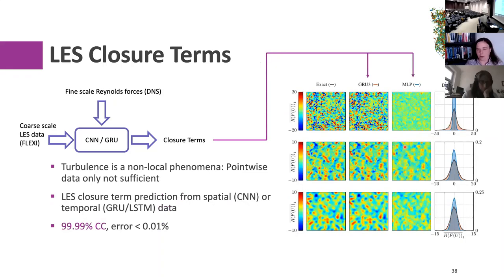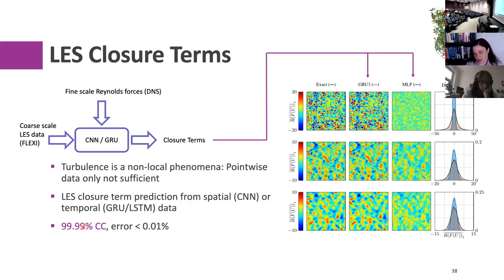We played around with that for a long time using both spatial and temporal data. We were able to get, for this simple case, very accurate predictions. With a particularly successful sequence network, we were able to achieve 99.9% correlation between our prediction and the true Reynolds stress. For comparison, the Smagorinsky model has about 0% correlation, and the scale similarity model about 70%.